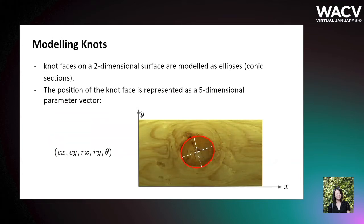In the literature, knots are typically modeled as elliptical cones when a piece of lumber is treated as a three-dimensional object. Therefore, the knot faces on a two-dimensional surface are modeled as ellipses, basically the conic sections.